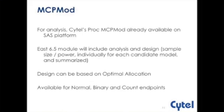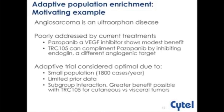The second enhancement deals with population enrichment — in particular, adaptive population enrichment. I'll use a motivating example to provide the setup for the method. Angiosarcoma is an ultra-rare disease poorly addressed by current treatments. Pazopanib is a VEGF inhibitor that shows modest benefit, but TRC-105 can complement pazopanib by inhibiting endoglin, a different antigenic target. An adaptive trial is optimal here because this is a small population with about 1,800 cases per year, limited prior data, and a possible subgroup interaction suggesting greater benefit for cutaneous versus visceral tumors.